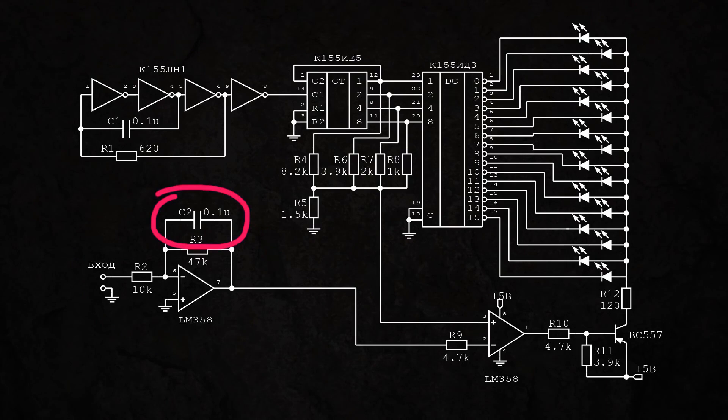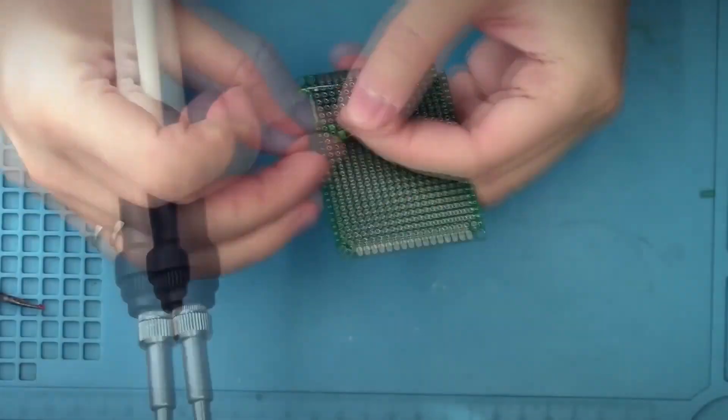This way, the circuit will be insensitive to very rapid signal changes. In general, this is up to your preference. Once again, this is the final circuit we get. Let's take a breadboard and assemble it.